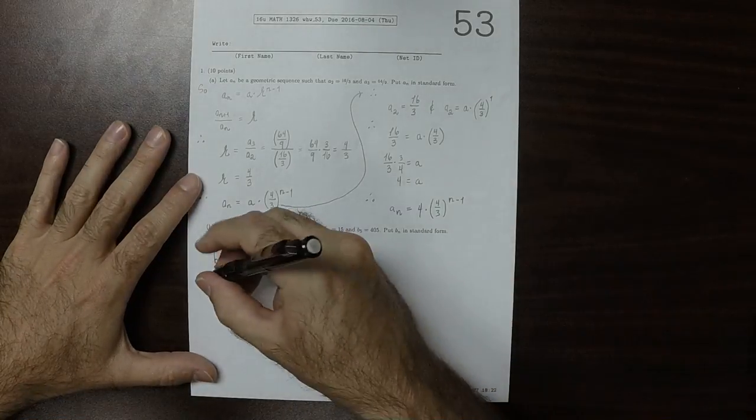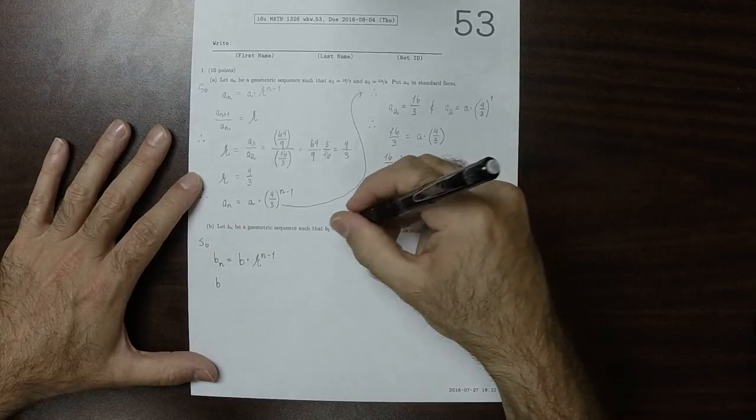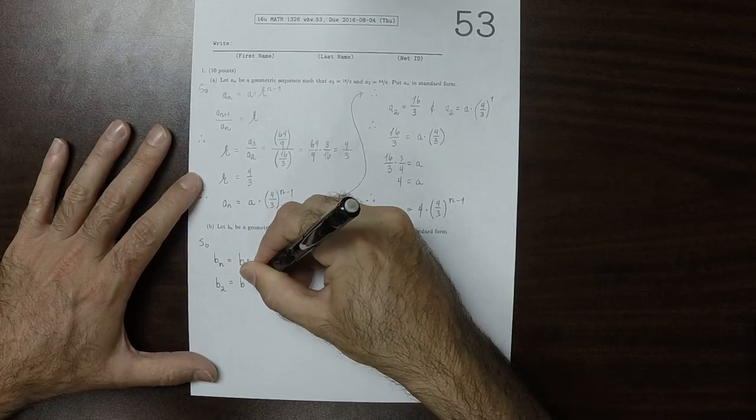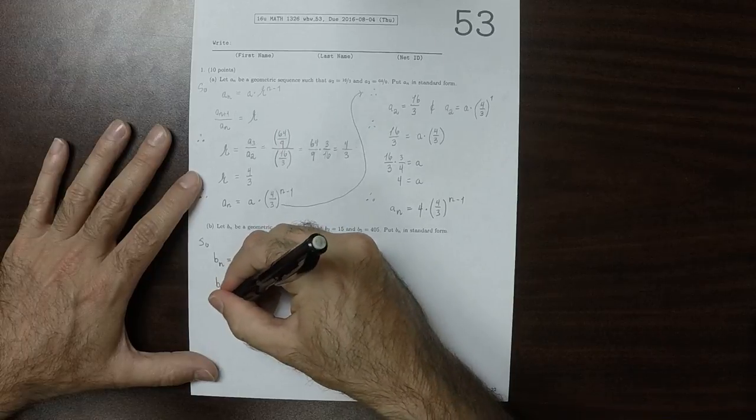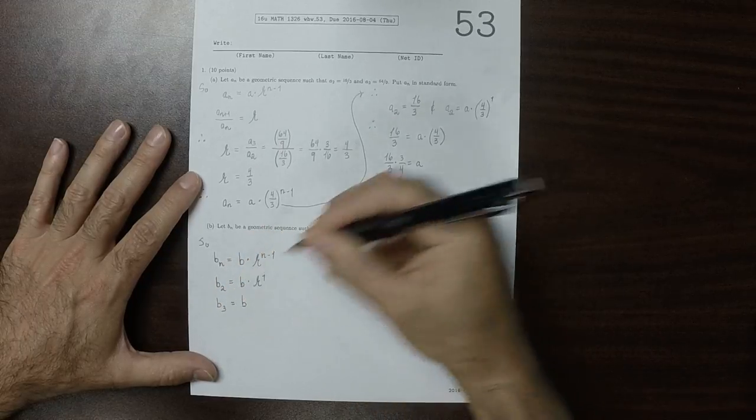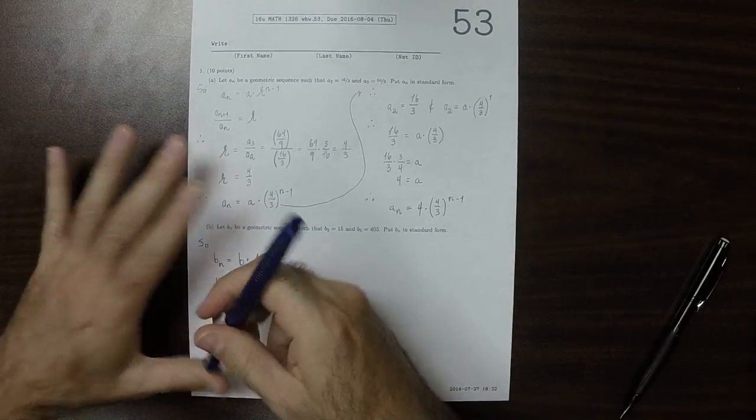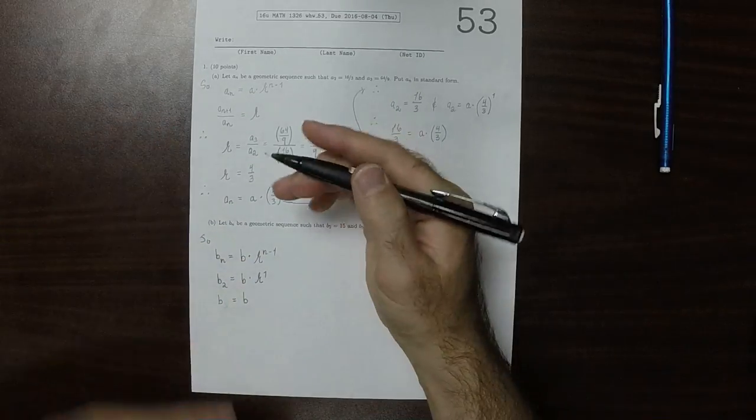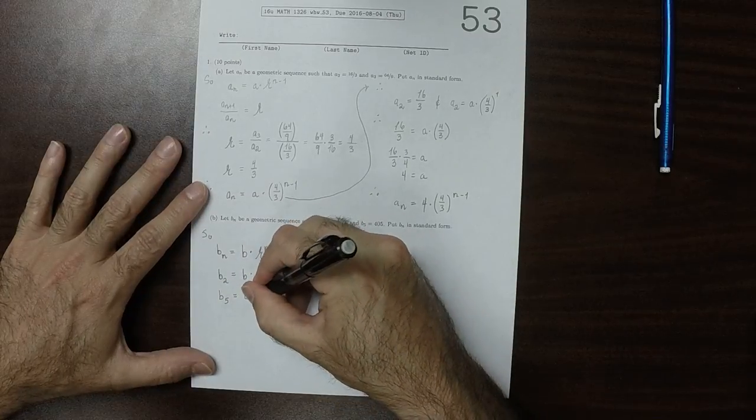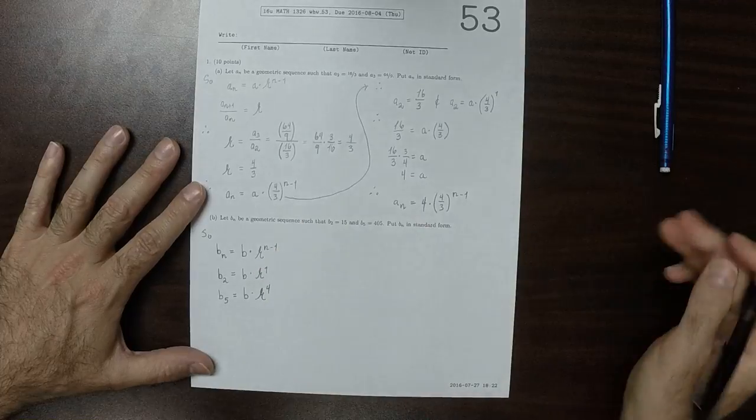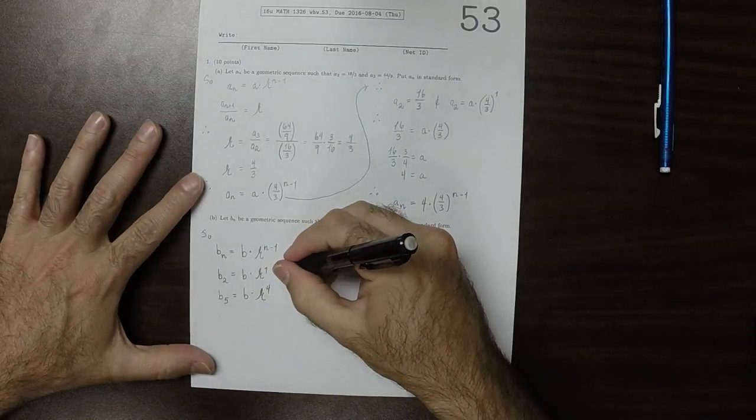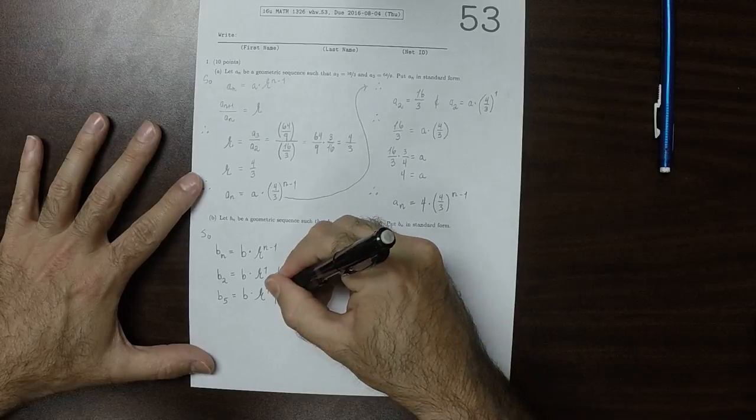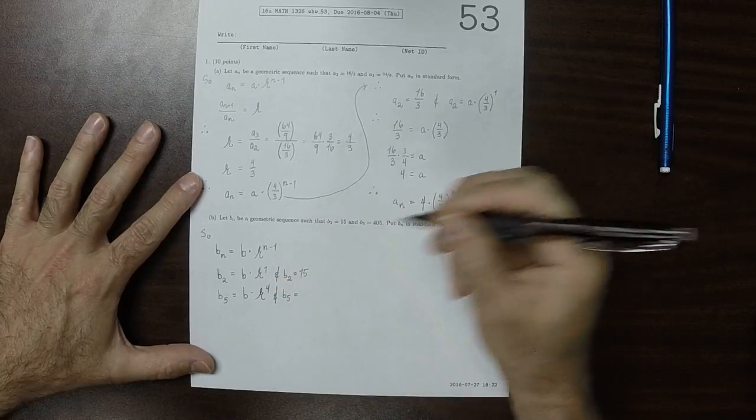What we know is that b2, well, that's going to be b multiplied by r to the 1. And b5, that's going to be the same b multiplied by the same r to exponent 4. And we know that b2 is 15. And we know that b5 is 405.